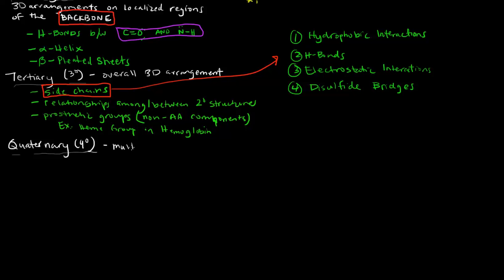For instance, hemoglobin has four polypeptide units that associate together to form one functional protein, so the highest level of structure hemoglobin has is quaternary. Whereas myoglobin — we'll talk more about hemoglobin and myoglobin later — since it only has one polypeptide unit, the highest level of structure myoglobin has is tertiary. If a protein has multiple polypeptide chains interacting to form one functional protein, then the highest level of structure that protein has is quaternary structure.